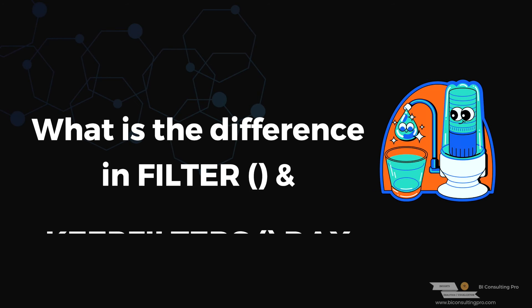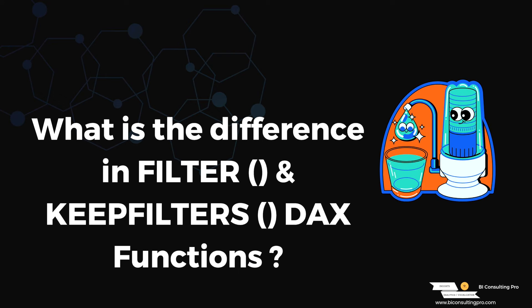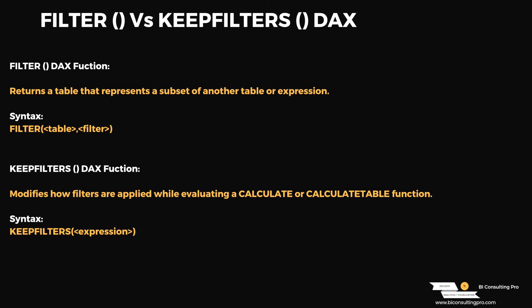The next question was: what is the difference between FILTER and KEEPFILTERS DAX functions? This is a critical one for advanced-level data analytics. FILTER returns a table that represents a subset of another table or expression — we generally use FILTER inside CALCULATE to modify the filter context. KEEPFILTERS is used to keep filters on a certain column or table, modifying how filters are applied when evaluating a CALCULATE or CALCULATETABLE DAX function.